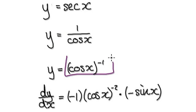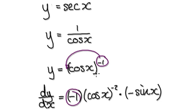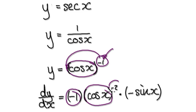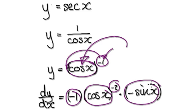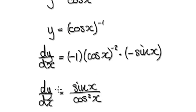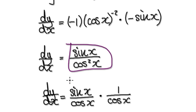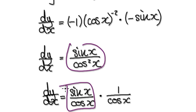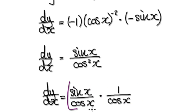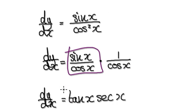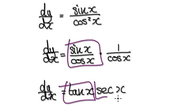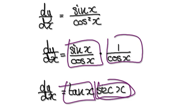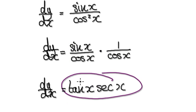By differentiating, rewriting as a power and using the chain rule, the power comes down giving minus 1, leaving the bubble intact, and the power gets reduced by 1. Then you multiply by the derivative of the bubble itself. Tidying this up and breaking it into two fractions, this thing here is tan, and you get secant of x times tan of x when you differentiate secant of x.